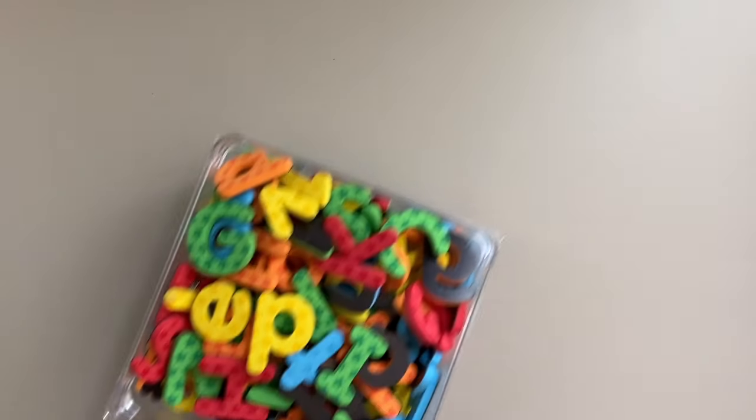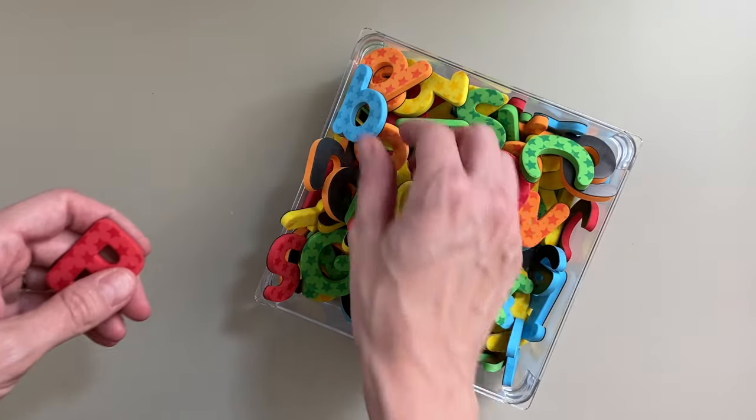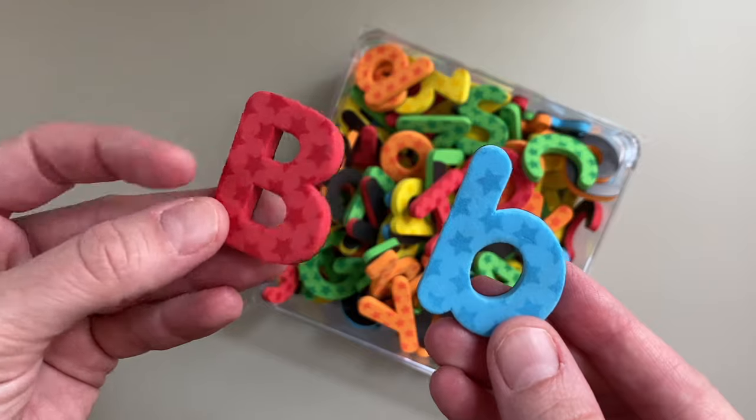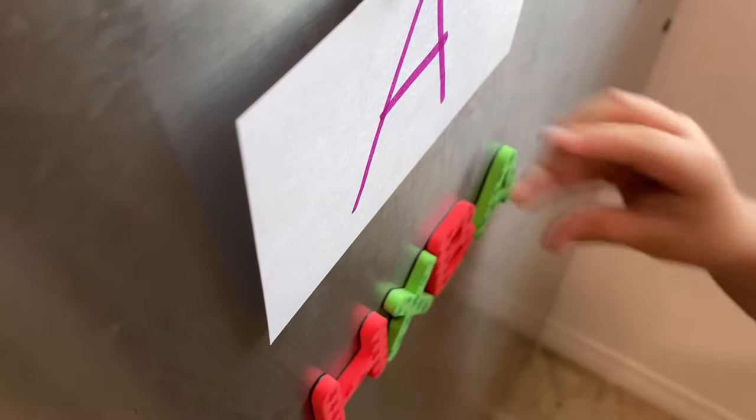Up next is uppercase and lowercase sort. You need two flashcards to label uppercase and lowercase, and uppercase and lowercase letters. If you don't have letters like these, you can always make your own flashcards. I'm a big proponent of using things you already have.